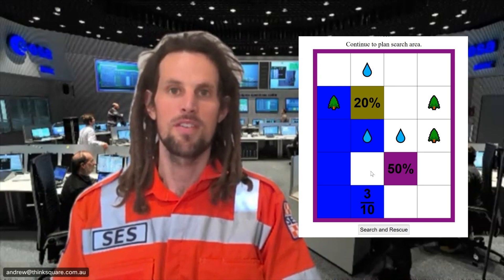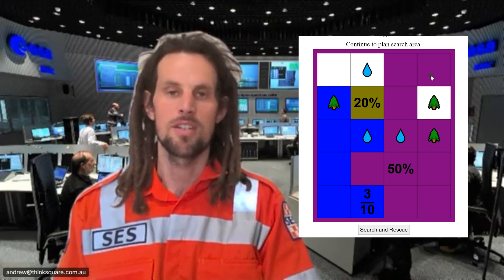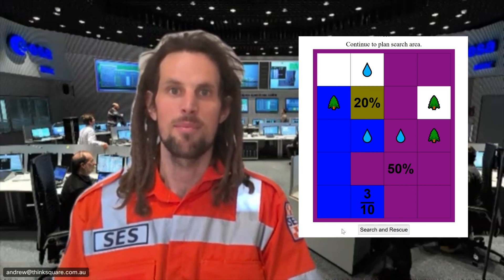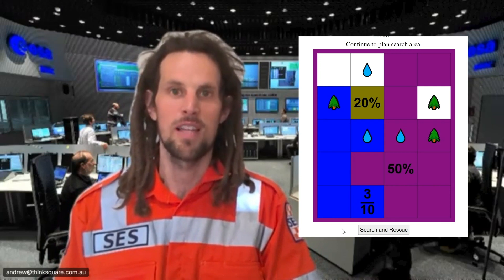Then we look at the 50% team — they can search half the map, which is 10 out of the 20 squares. We can choose their search area by clicking through here, but you'll notice there's a tree on the right that we can't include, because if we do, the 20% team won't have access to firewood. So at this point, they can't search it as it would also cause an overlap.